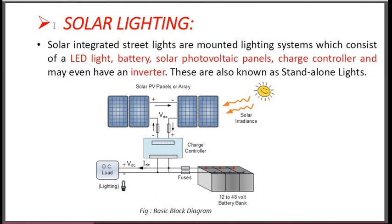The third and last application is the solar lighting system. Solar integrated street lights are a mounted lighting system which consists of LED light, battery, solar PV panels, charge controllers, and may even have an inverter for AC loads. These are also known as stand-alone lights because they are not connected to the grid power source. The basic block diagram for the solar lighting system mainly consists of solar PV panels or arrays, charge controllers, solar irradiation sensor, DC load or LED lights, and battery bank from 12 to 48 volts depending on the LED lamp usage.